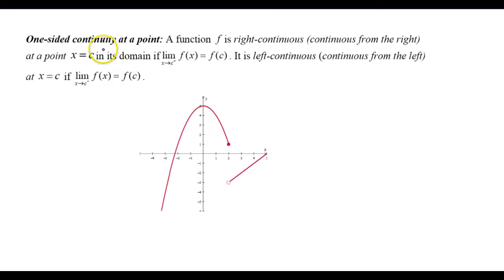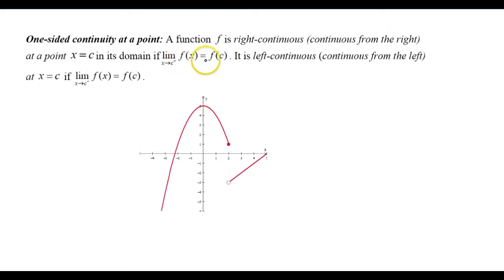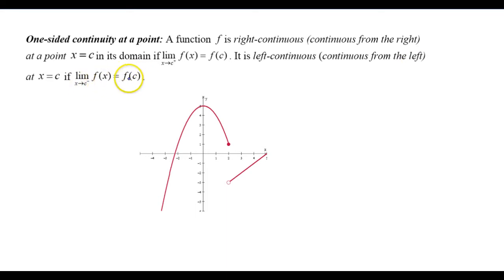It is also possible to have one-sided continuity at a point. A function f is called right continuous at x equals c if the limit as x approaches c from the right of f of x equals f of c. And a function is left continuous at x equals c if the limit as x approaches c from the left of f of x equals the function value f of c.